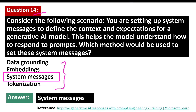Looking at a real-world example: in e-commerce recommendation, platforms like Amazon use generative AI models guided by system messages to recommend products based on users' preferences and browsing history, improving the overall shopping experience.